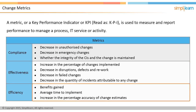For efficiency: benefits gained — that is the value of the change compared to the cost incurred to implement the change — average time to implement the change by urgency, priority, or type, and increase in the percentage accuracy of change estimates.